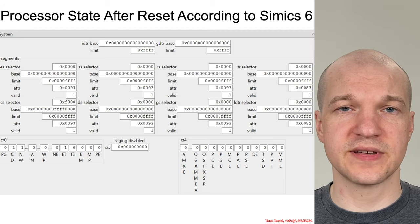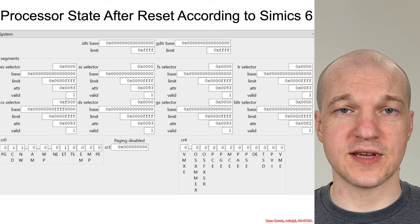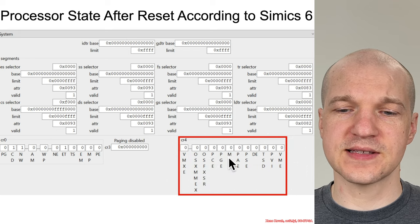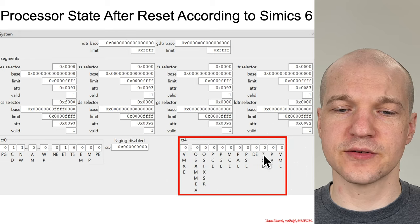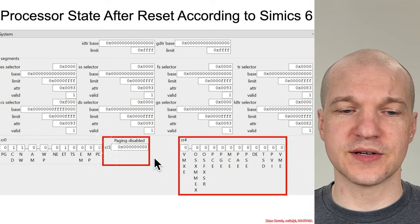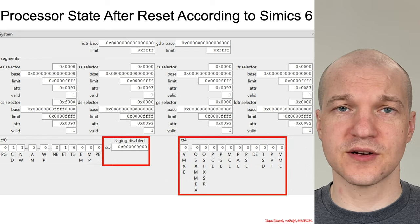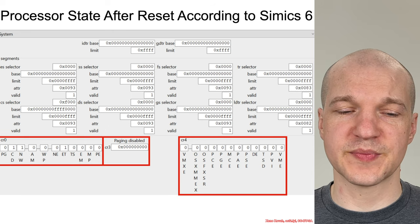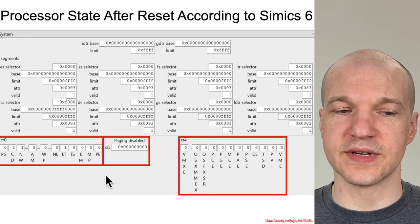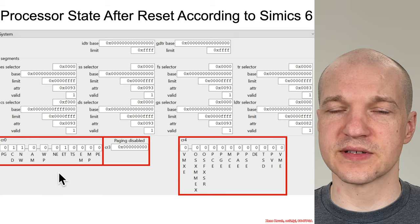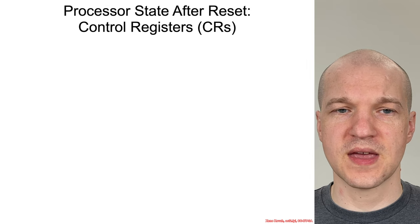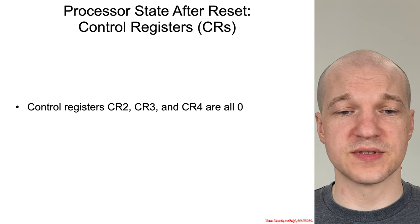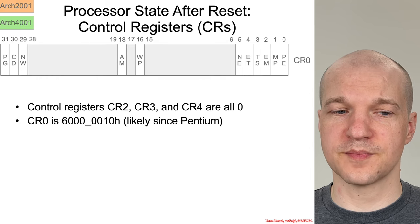What does CIMICS have to teach us about the initial state after reset? It tells us that CR4 is mostly all zeros, CR3 is zero, and paging is disabled, which is what we would expect. CR0 is mostly all zeros as well. So let's dig into each of those a little bit more. CR2, CR3, and CR4 are all zero.